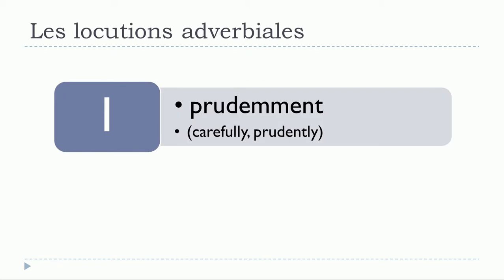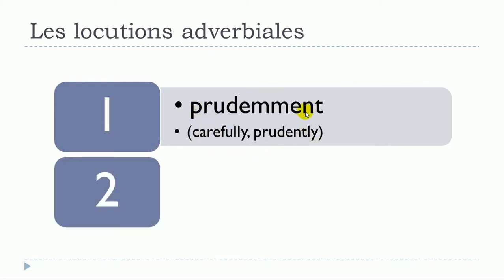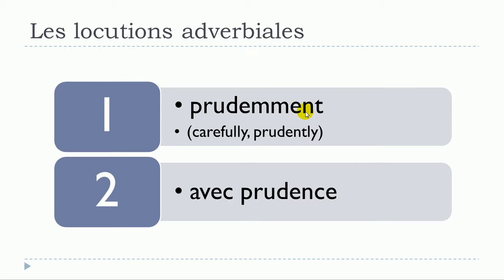The first example is prudemment — prudently or carefully. In locution adverbiale, you could use avec prudence. So either prudemment or avec prudence.